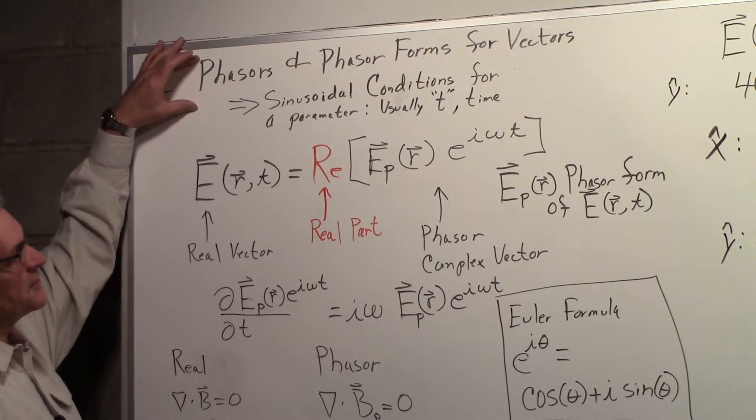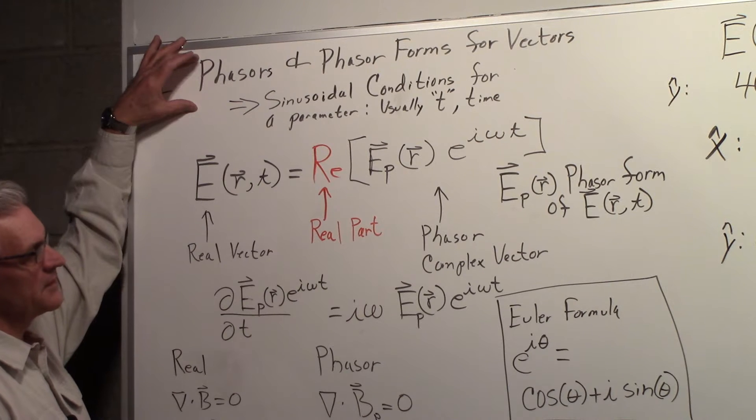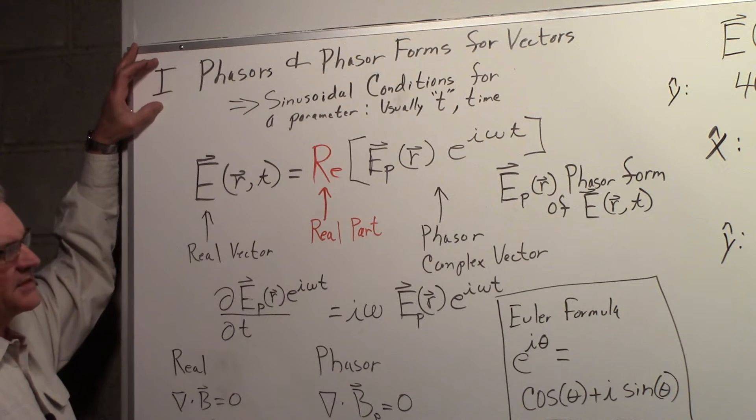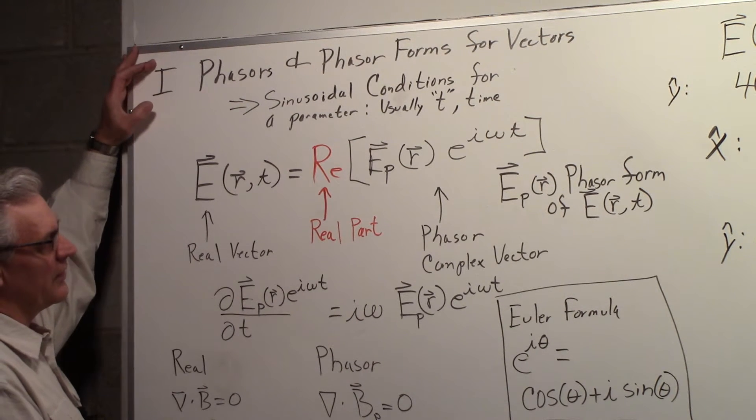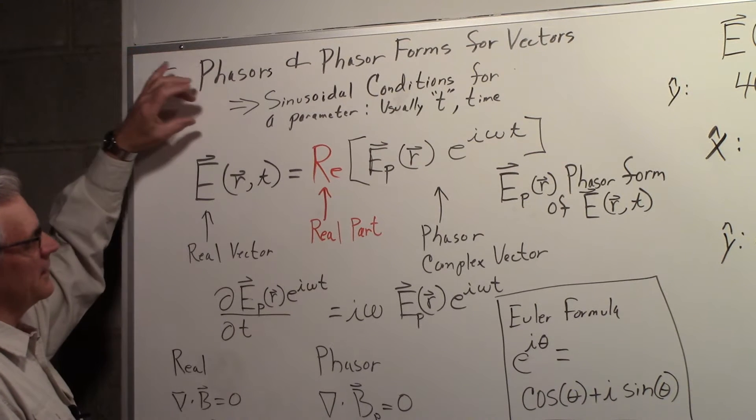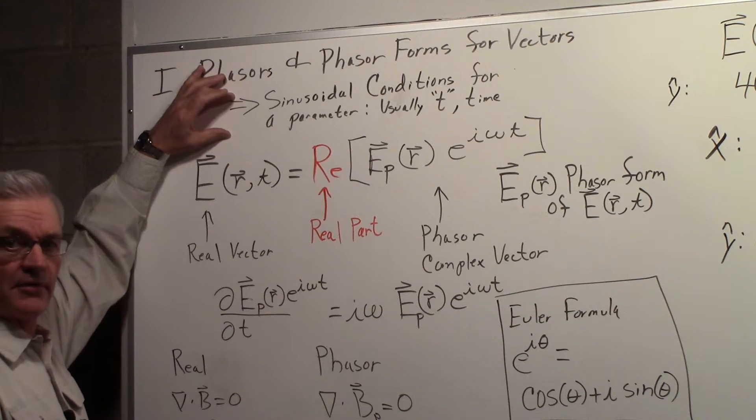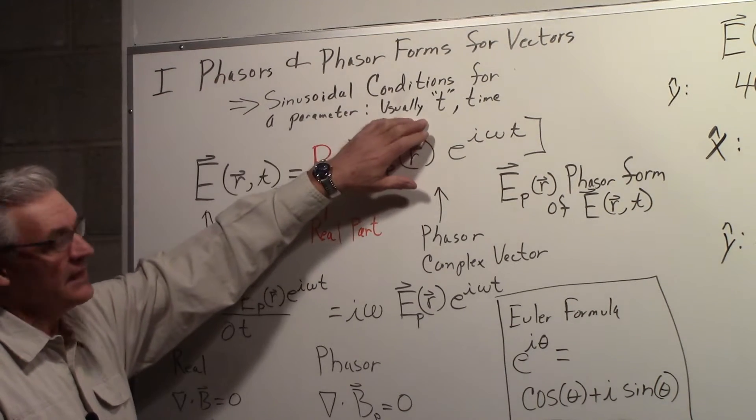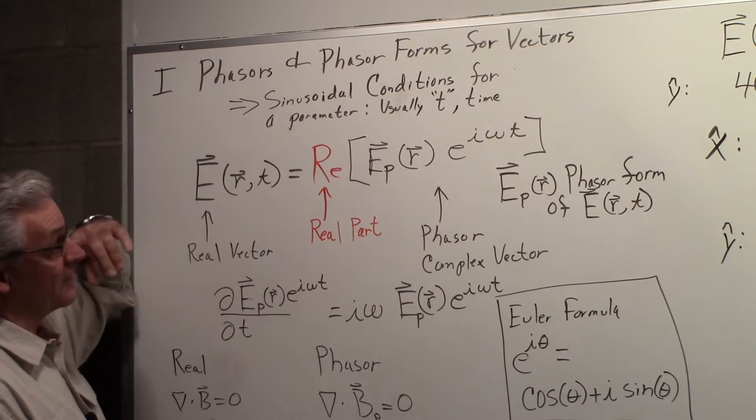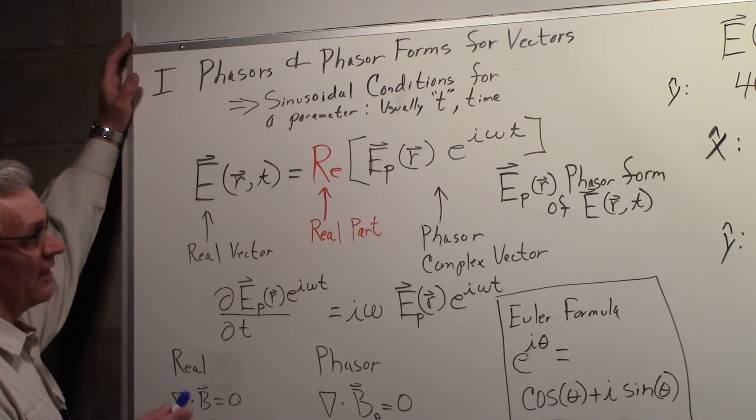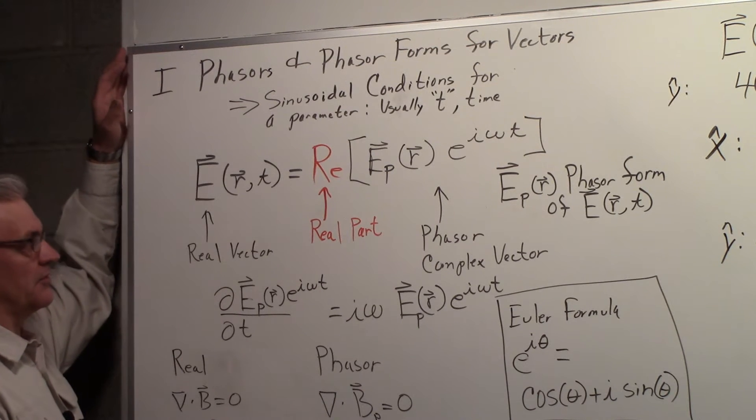We want to take a look at phasors and phasor forms for vectors. We're going to call this part one. We'll do a few other parts. This applies to sinusoidal conditions for some parameter, and usually t is the parameter time that we're going to have behaving in a sinusoidal way.